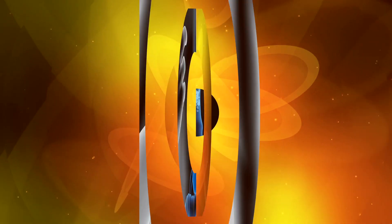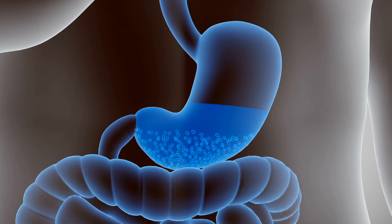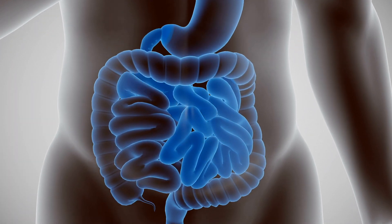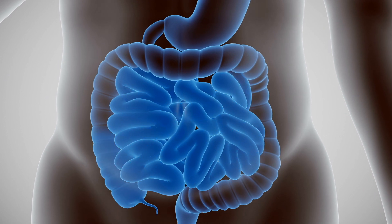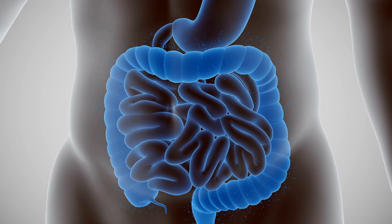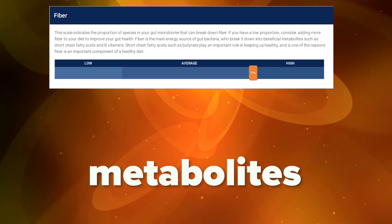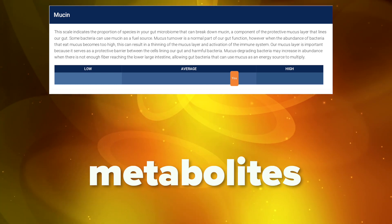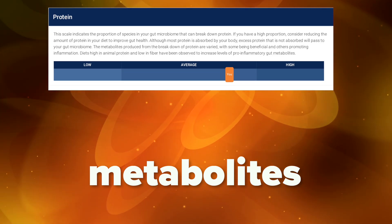After you eat a meal, food gets broken down in your stomach and travels to your small intestine where most nutrients are absorbed. The food components that cannot be absorbed in the small intestine, such as fiber and excess protein, make their way to your large intestine where your gut microbiota transform these components into a variety of products called metabolites. These metabolites can play an important role in your health, and you can see the proportion of species in your gut that can break down these fuel sources.